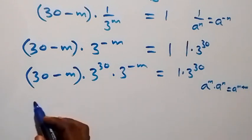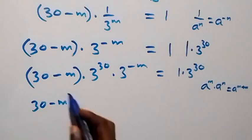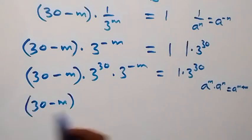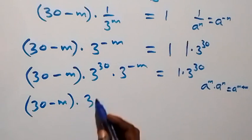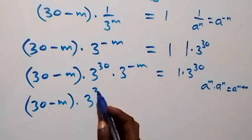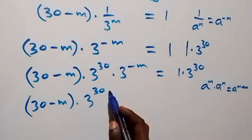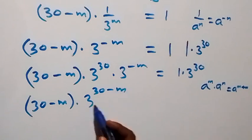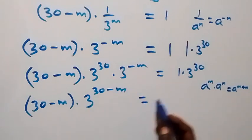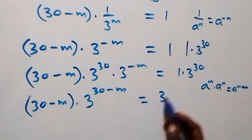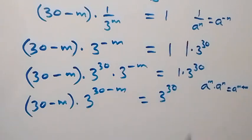Combining the exponents, we have 30 minus m times 3 raised to power 30 minus m equals 3 raised to power 30 on this side.